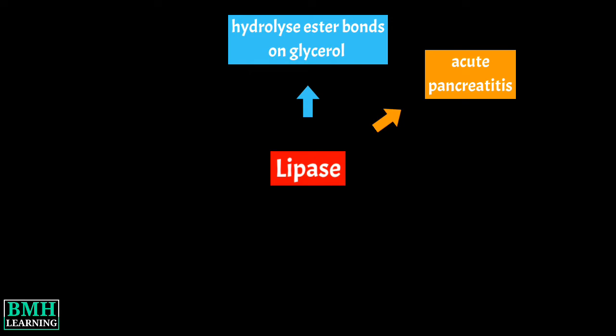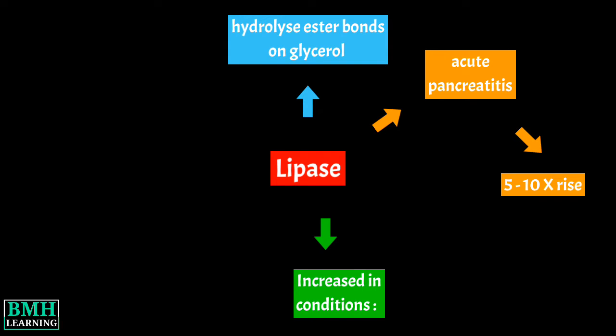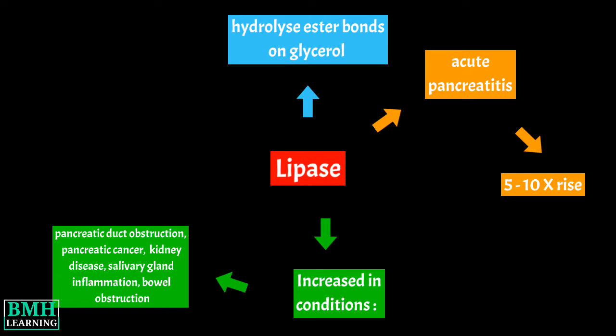In acute pancreatitis, lipase levels can rise 5 to 10 fold within 24 to 48 hours. Increased activities have also been associated with pancreatic duct obstruction, pancreatic cancer, kidney disease, salivary gland inflammation, bowel obstruction, and other pancreatic diseases. Decreased levels may indicate permanent damage to lipase producing cells in the pancreas.